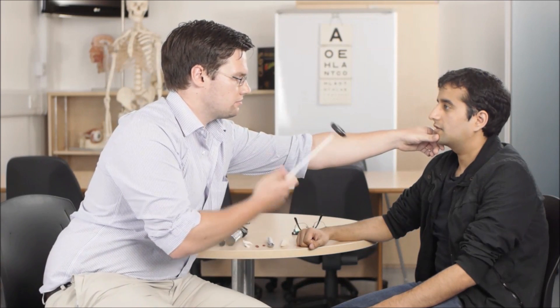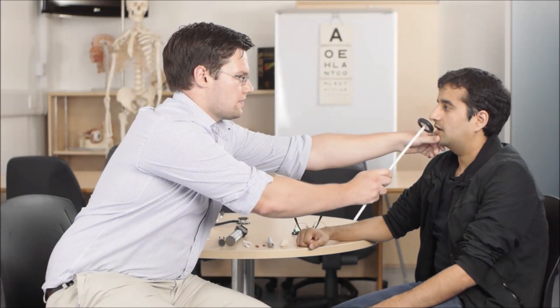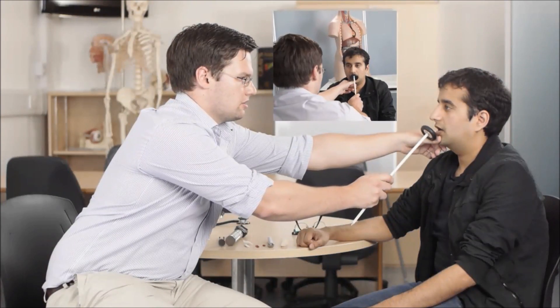Lastly, we're going to do the jaw jerk. This is normally absent in people. However, it can be exaggerated in people with an upper motor neuron lesion such as a pseudobulbar palsy. For this you will need your tendon hammer. I'm just going to put my thumb on your jaw. Please relax with your jaw. And just strike your thumb firmly.